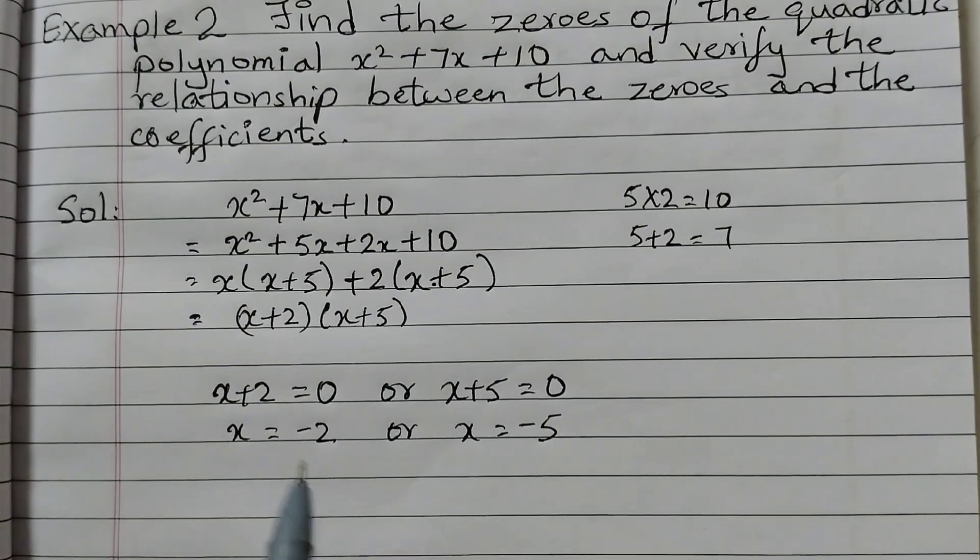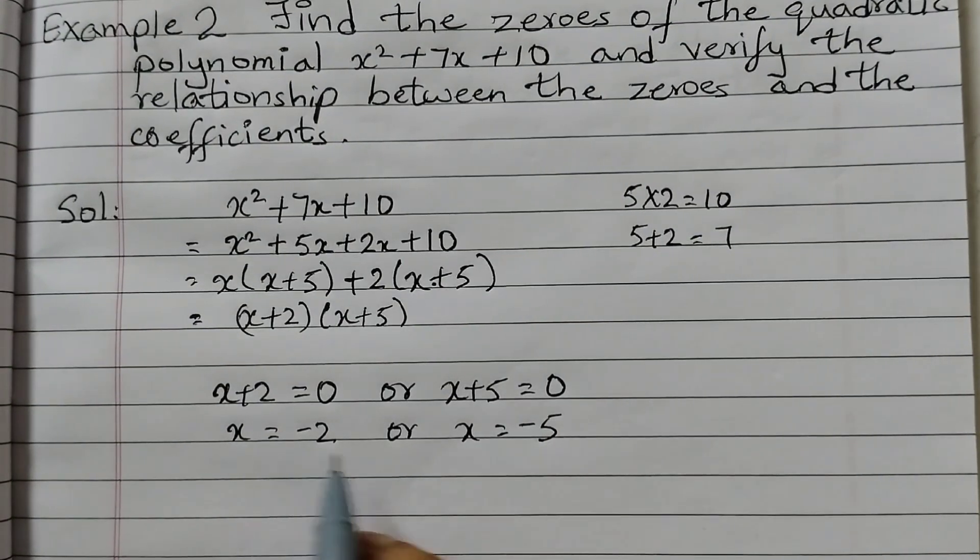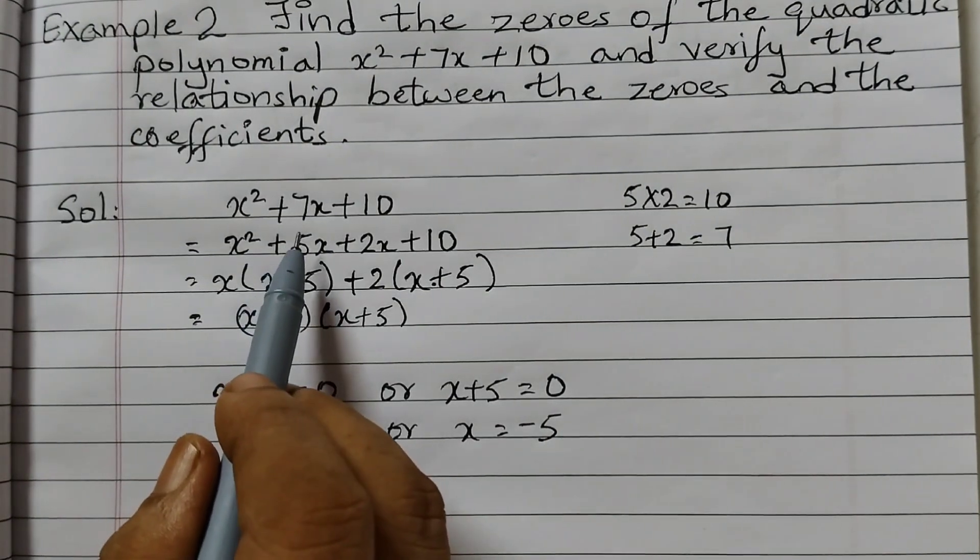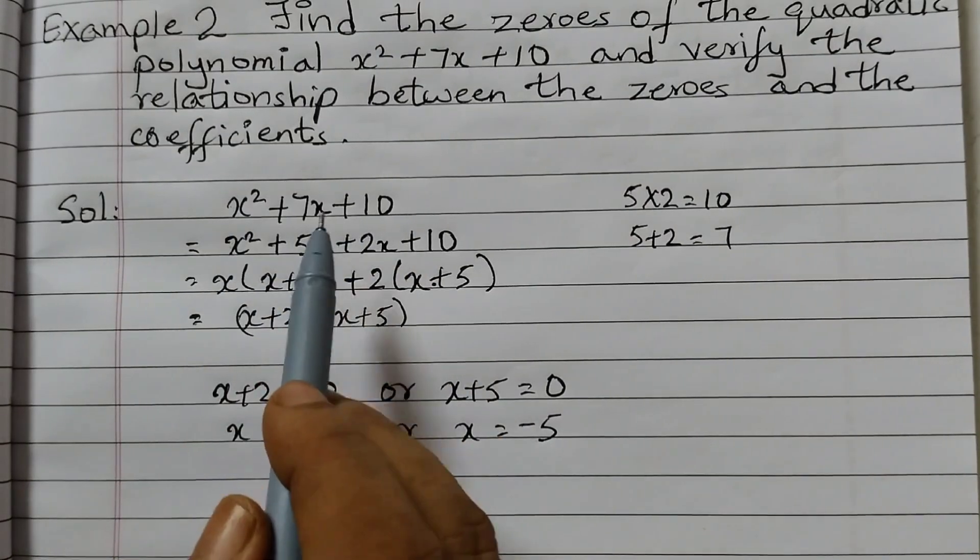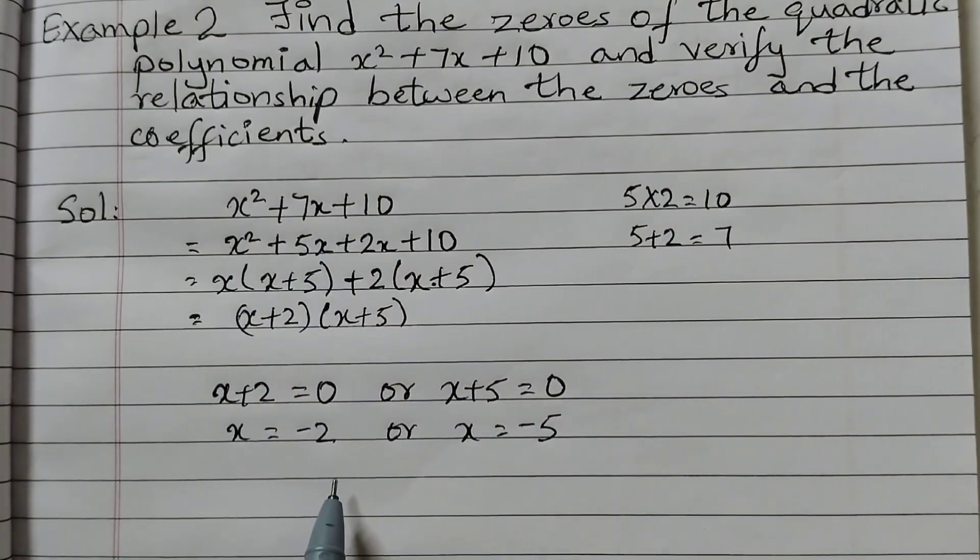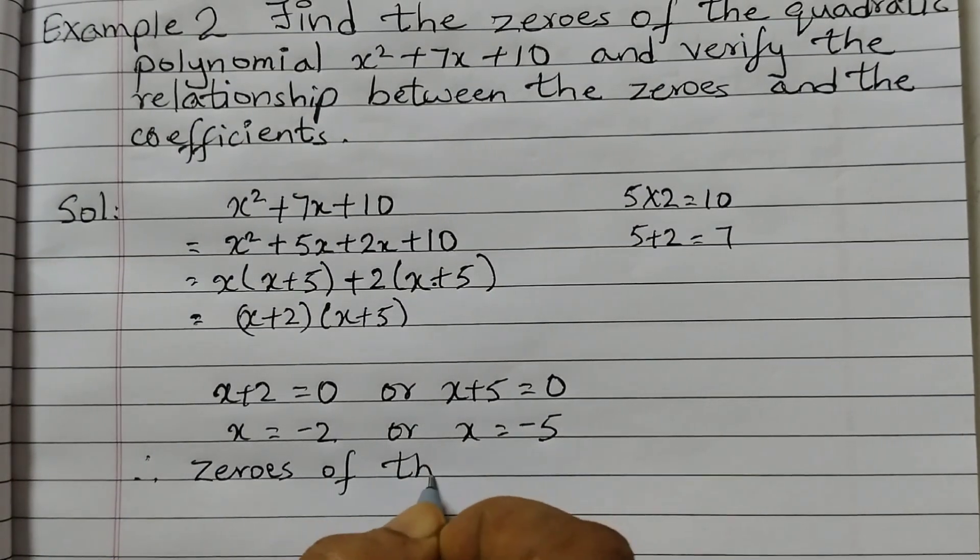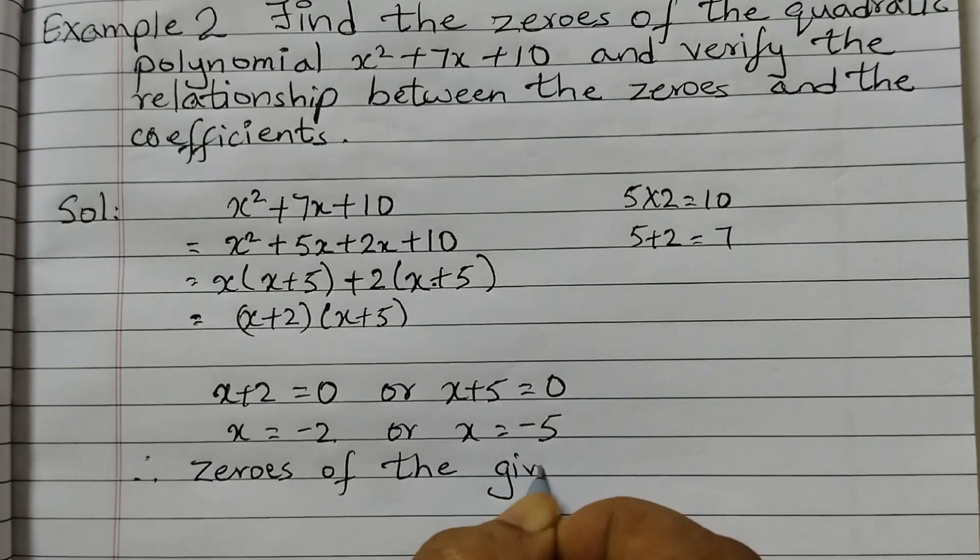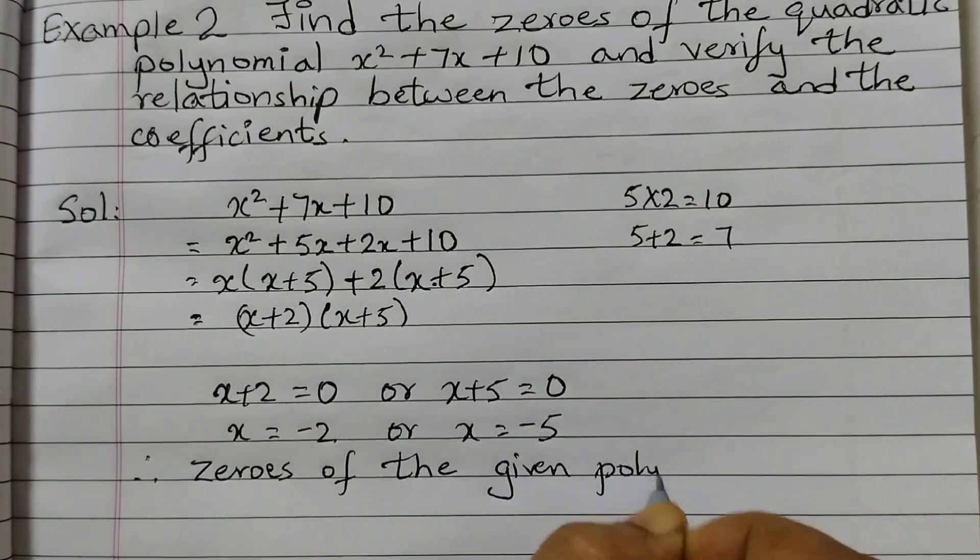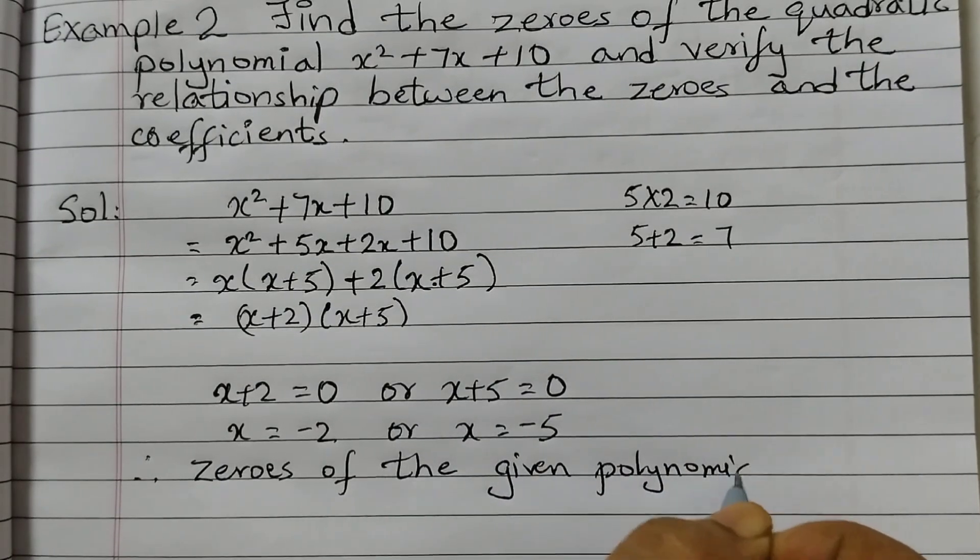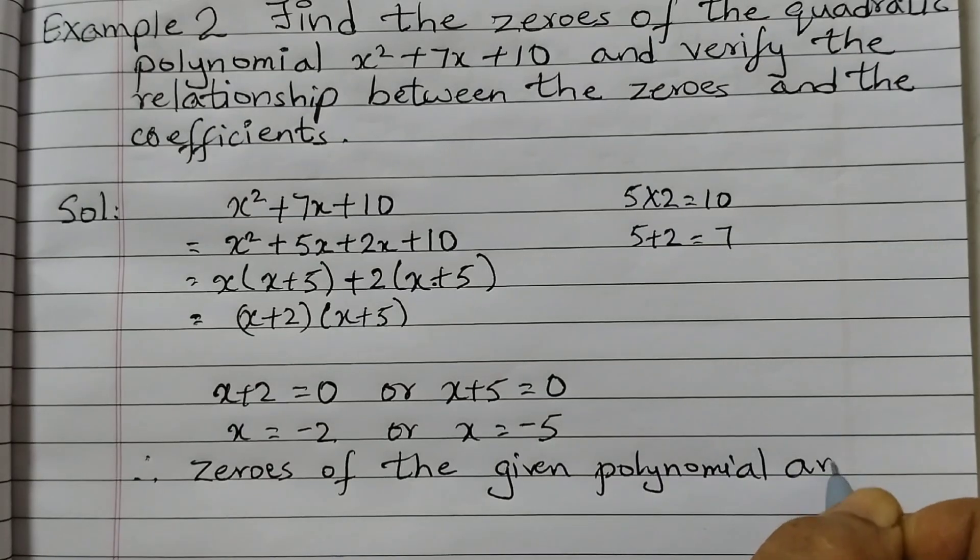The meaning of zero is if I put this value that is minus 2 or minus 5 in this given polynomial, the whole thing will become 0. That's why these are called the zeros of the polynomial. Therefore zeros of the given polynomial are minus 2 and minus 5.